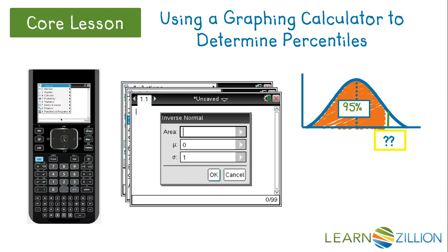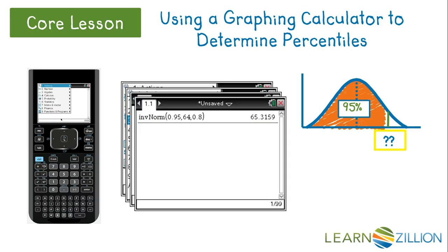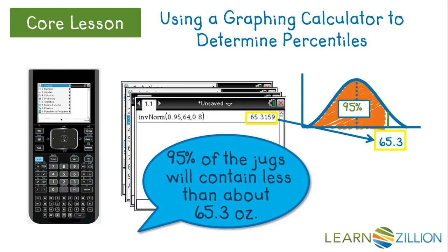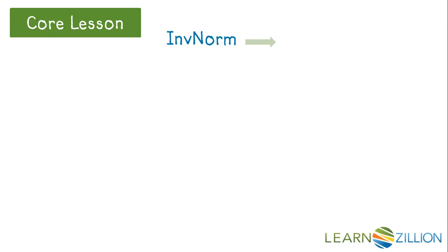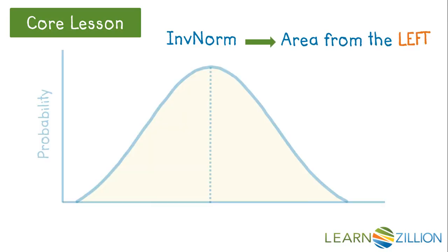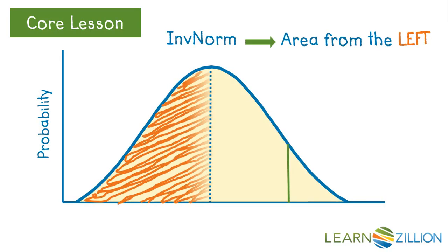This is an important thing to remember: the Inverse Normal function will interpret the area you input as the area under the normal curve coming from the left. This is perfect for percentile problems because a percentile is a value less than which a certain percentage of the data lies. Back to the milk jug problem — we input 0.95 for area, 64 for mean, and 0.8 for standard deviation. The calculator returns 65.3159, which means that 95% of the jugs contain about 65.3 ounces or less.